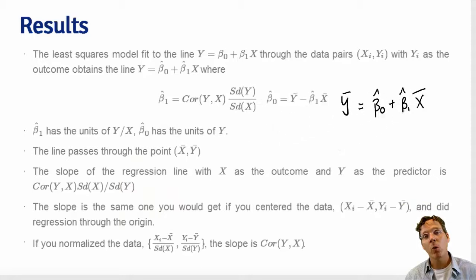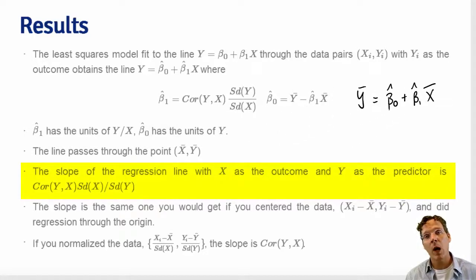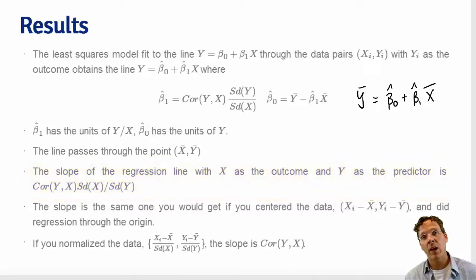If we reverse the role of y and x and treat x as the outcome and y as the predictor, then we simply get the answer that the slope of this line is the correlation times the standard deviation of x divided by the standard deviation of y. So you get a different answer when you fit x as the outcome and y as the predictor than if you fit y as the outcome and x as the predictor.